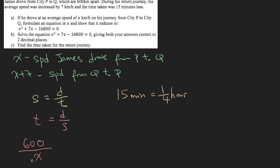Now this takes a longer time than the return journey. And the return journey, the distance is the same distance, but the speed is increased by 7 kilometers per hour, so x plus 7. So this is the time taken for traveling from P to Q, and this is the return journey.